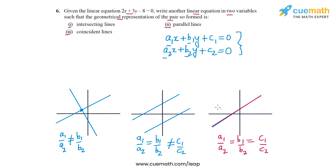Coming back to our original question, we are given the linear equation 2x plus 3y minus 8 equal to 0, and we have to write another equation so that the lines corresponding to the pair are intersecting, parallel, or coincident. All we need to do is write an equation for the second line so that the coefficients satisfy the relevant constraints in each part.